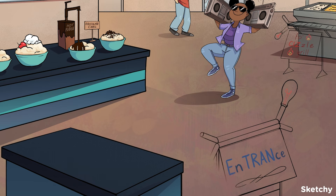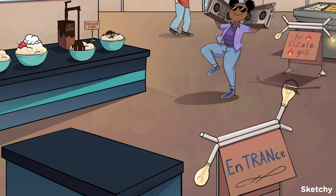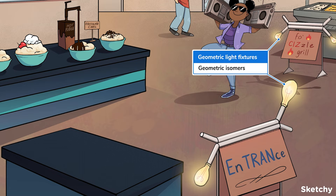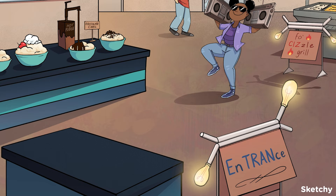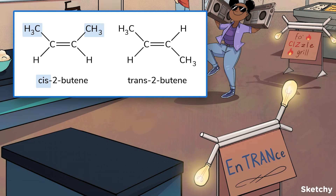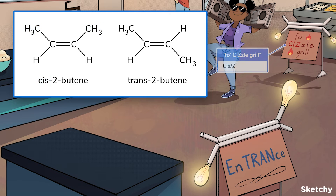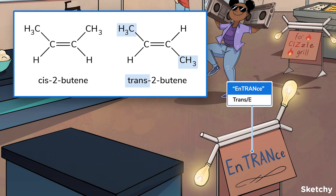Next, there's geometric isomers. These molecules have their functional groups oriented differently across a double bond. Two geometric isomers can be classified as E and Z, or cis and trans. For all intents and purposes, Z is the same as cis and trans is the same as E. To determine if a geometric isomer is cis or trans, identify the highest priority group bonded to each carbon in the double bond. If the highest priority groups are on the same side of the double bond, the molecule is cis — symbolized here by a faux-sizzle grille sign with light bulbs on the same side of the tube. If the highest priority functional groups are on opposite sides of the double bond, it's a trans isomer, remembered by this entrance sign with light bulbs on opposite sides.